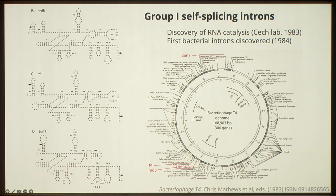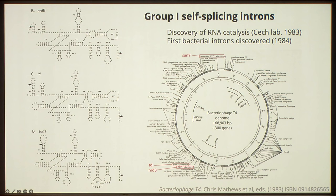Questions arose: are these the only three introns in there? How many are out there in bacteria, in viruses? Can we search for them? This was pre-BLAST, but even then we had the ability to search for similar sequences. Too bad — these are catalytic RNAs. They conserve their secondary structure but not much of their sequence. So you can't just take a sequence similarity search like Smith-Waterman and sweep through genomes looking for more of these. You have to do something more complicated.